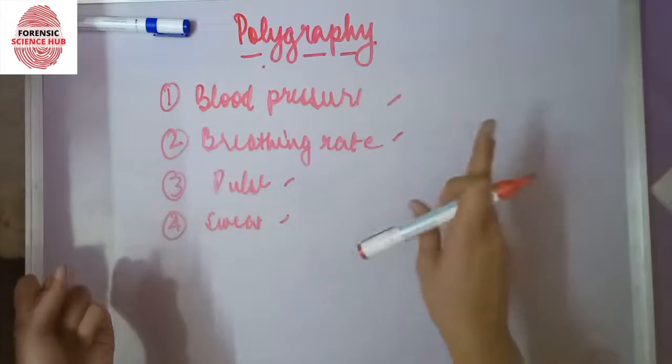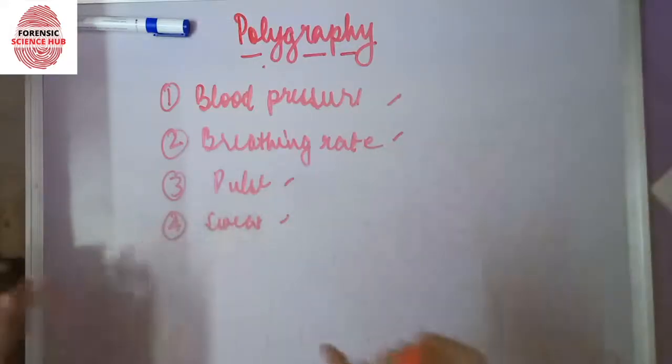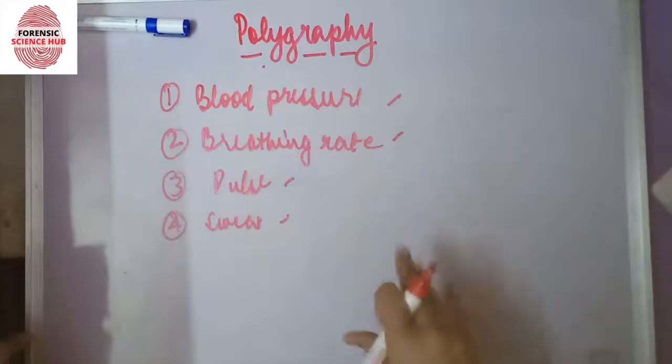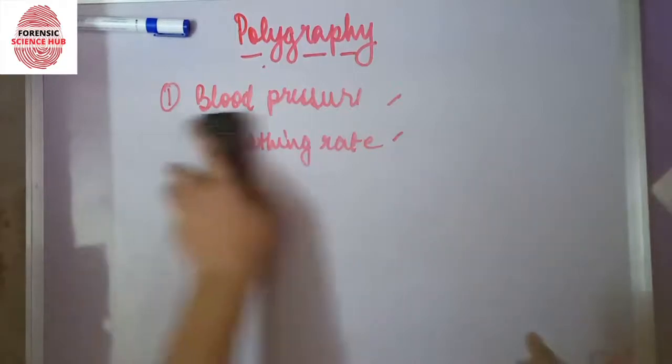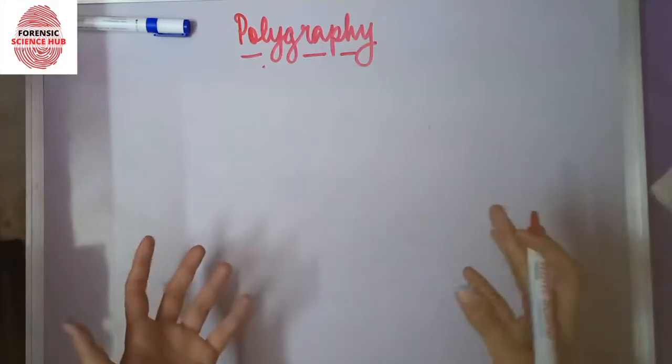Sometimes arm or leg movements are also recorded, but not always. These four factors are the main things taken into account. When the polygraph test starts, a questionnaire is prepared.